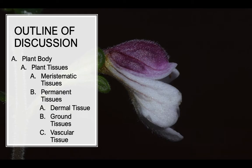Outline of discussion: we will be discussing the plant body. Under the plant body, we will discuss the tissues of the plant. Under plant tissues, we'll deal with two types — meristematic and permanent tissues. Under the permanent tissues, we'll discuss different categories: dermal, ground, and vascular tissue.